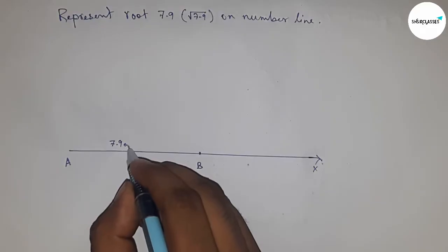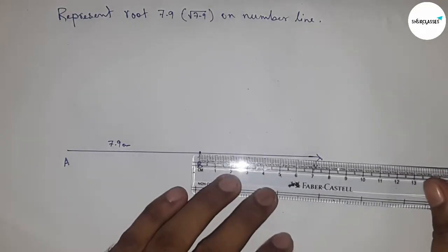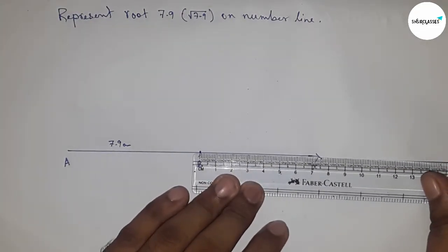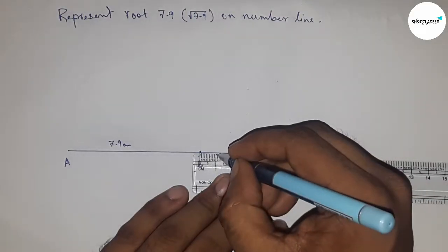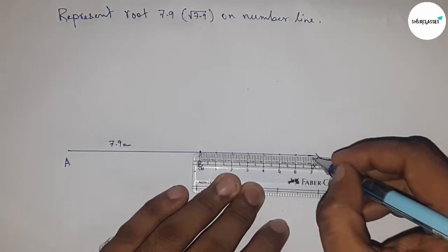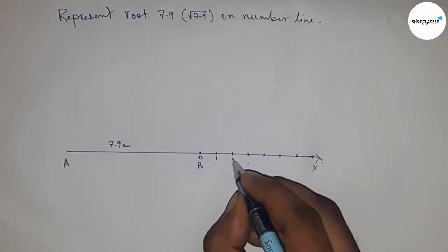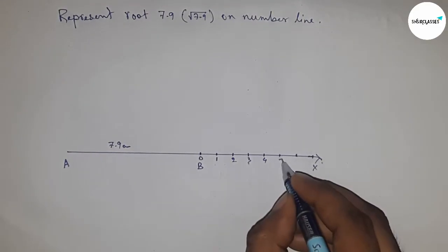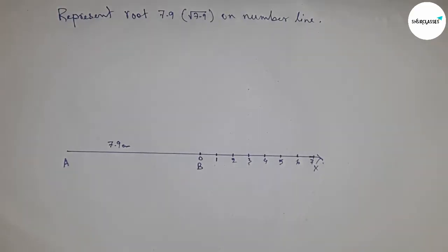Now mark the numbers on the line from B to X by using a scale. So this is 0, 1, 2, 3, 4, 5, 6, 7, and so on. Take this as point C.